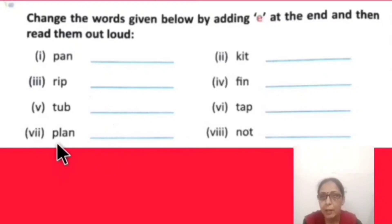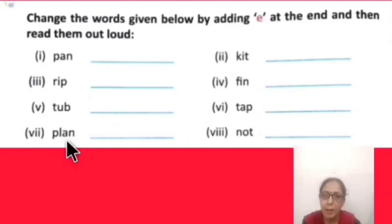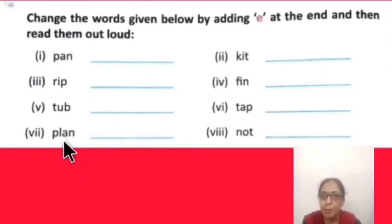Next word: P-L-A-N, 'plan' — meaning to plan or make arrangements. When E is added at the end, the word becomes 'plane' — an aeroplane, which everyone has seen.